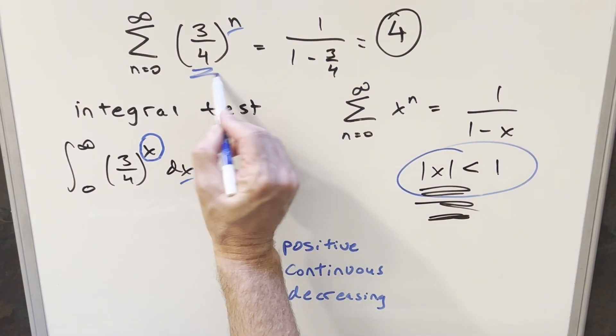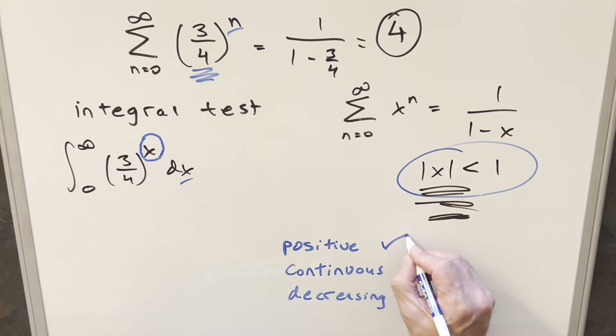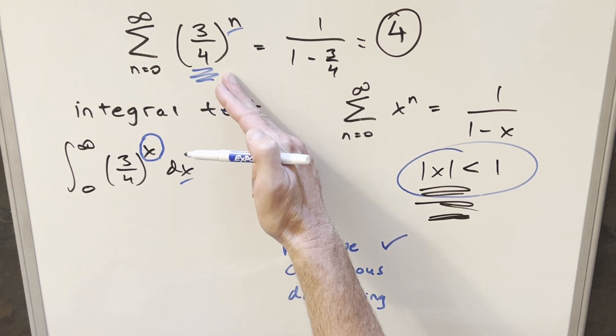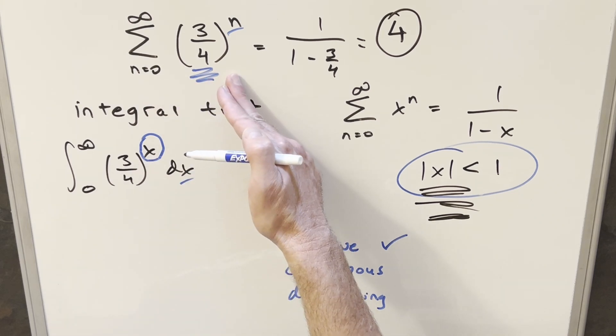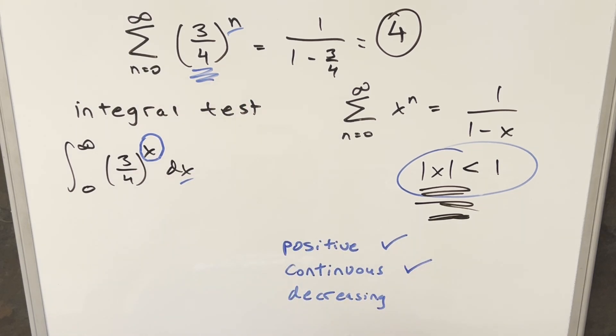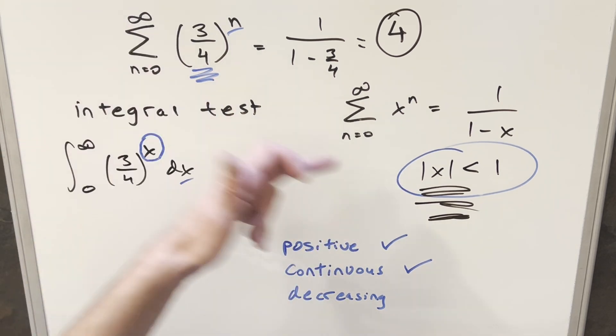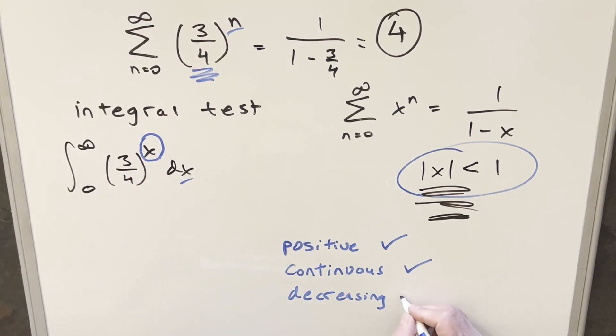So for positive, we're going to say this is clearly positive just because our base is positive raised to an exponent. Continuous, there's no asymptotes or anything. This is going to be continuous. There's no problems from 0 to infinity on this. So this is definitely continuous. We can look at a graph for this, but clearly this is going to be decreasing as well. It really comes back to what we already know, that this is less than 1. When you raise to bigger exponents, this is just going to be decreasing. So let's give that a check.